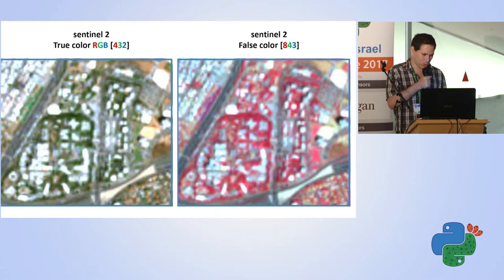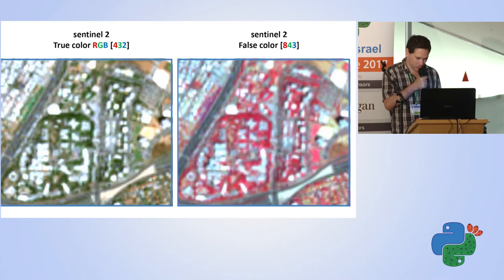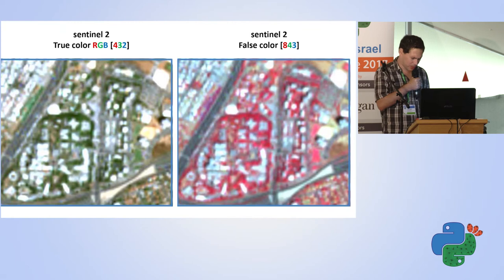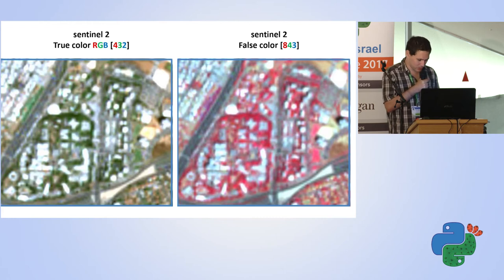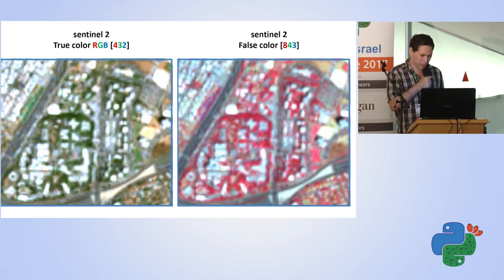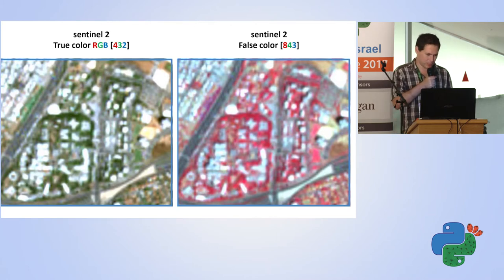You see here a Sentinel-2 image at 10-meter resolution. One version is true color, how the human eye sees it. Another is false color, where one band that the human eye cannot see is more sensitive to vegetation. Not long ago, this kind of resolution image would have cost a lot of money. You also have the option to buy commercial satellite data with resolution up to 40 centimeters.